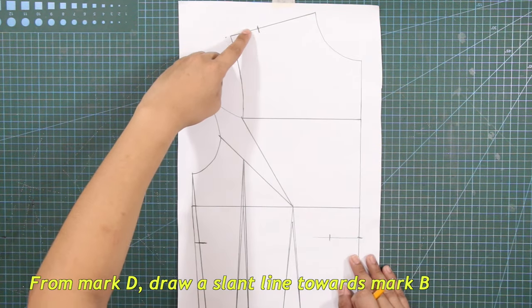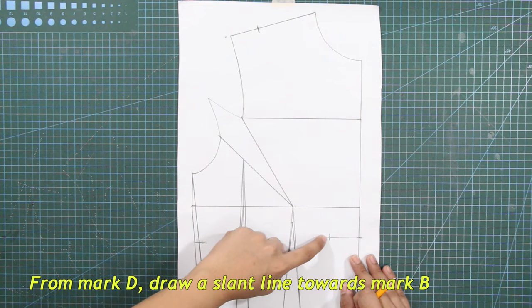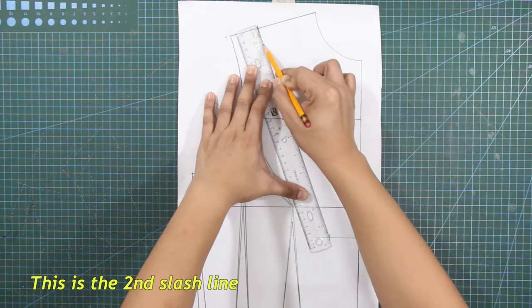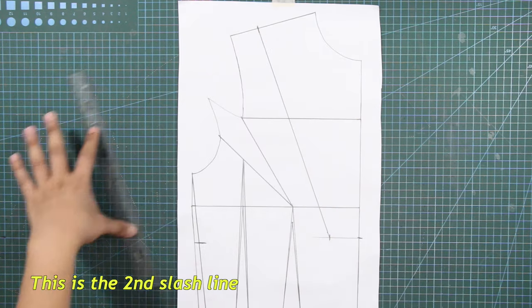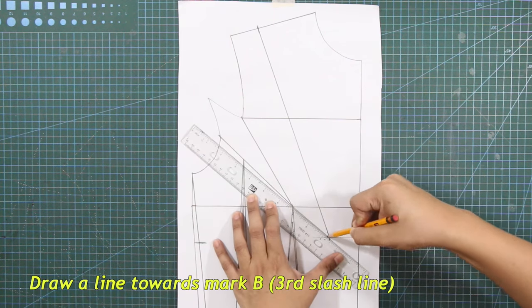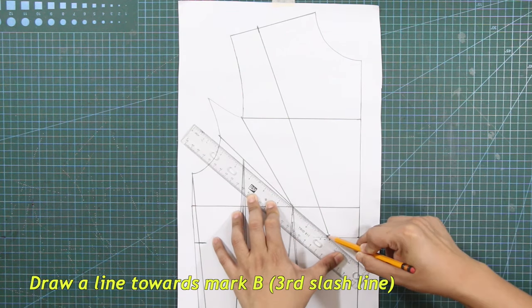From mark D, draw a slant line towards mark B. This is the second slash line. From bust point at armhole bust dart, draw a line towards mark B. This is the third slash line.